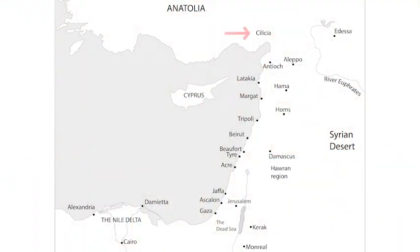That coastal strip is enormously important for agriculture, and of course if it's good for agriculture that also means it's very important geopolitically as the various powers of the Near East compete over available farmland. Other areas of good farmland include the Cilician Plains in the north and the Hauran region to the south of Damascus. Other areas with less precipitation are suitable for vines or olive trees, but further east you typically get into more desert regions which aren't suitable for cultivation.